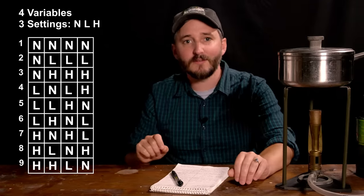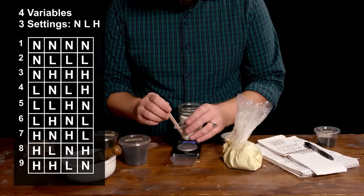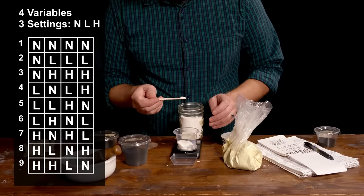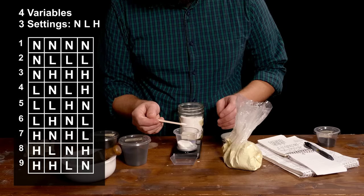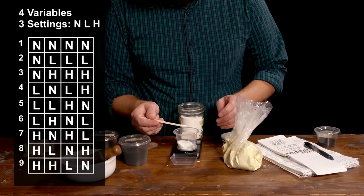Here is what an array looks like with four different variables, each with three different settings: high, neutral, and low. A complete series of tests for this many factors would require 81 individual experiments. This table gets the job done in nine.